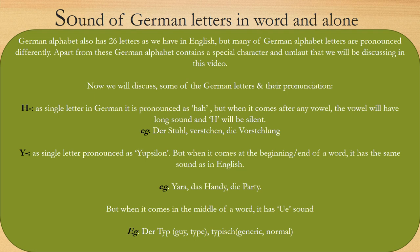Now let's see how Y is pronounced. As a single letter in German, Y is pronounced as 'Ypsilon'. But when it comes at the beginning or at the end of a word, it has the same sound as in English. For example: Yara, Handy, Party — the same pronunciation as in English. But when it comes in the middle of a word, it has a U-E sound — a combination of U and E. For example: Kübel.